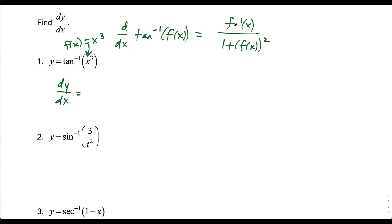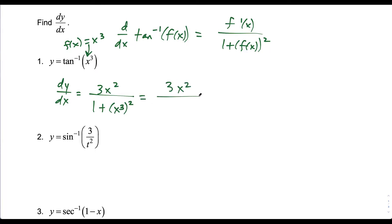The chain rule variant for tangent inverse of f of x gives us f prime of x — the derivative of x to the third is 3x squared — over 1 plus f of x squared. Replacing f of x with x to the third, we get 3x squared over 1 plus x to the sixth. Just remember, you multiply exponents when you have an exponent to an exponent. So that's our answer to the first question.